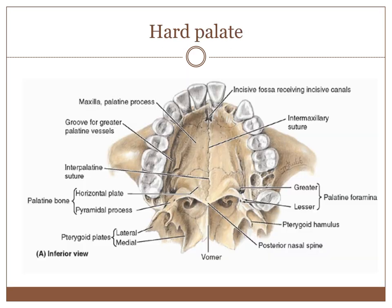The hard palate forms the roof of the oral cavity. Seen from below, anteriorly it is formed by the perpendicular plates of the maxilla and posteriorly by the horizontal plates of the palatine bone. The hard palate is thus formed by the maxilla and palatine bones. These two meet at a cross-like suture called the cruciform suture.